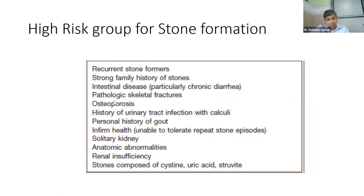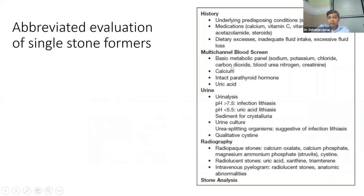Even for a first-time stone former without any of the above history, take a history of underlying predisposing conditions, medications, and dietary excesses — such as excessive animal proteins or non-dairy proteins. Do a basic blood screen: sodium, potassium, calcium, ABG, and intact parathyroid hormone — which is a must even in single stone formers. Urine analysis, urine culture, and stone analysis are mandatory in all patients. Stone analysis should be done by X-ray diffraction or FTIR infrared spectroscopy. Many times you find a composite stone with uric acid, calcium oxalate monohydrate, and apatite components.